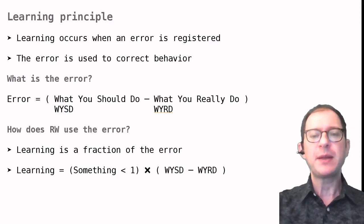RW then uses a fraction of this error to learn. By a fraction, I mean something like 5%, 10%, or something like that. What this means exactly, we will see in a minute. For now, keep in mind that a single learning experience rarely corrects the error fully. It takes time to learn.